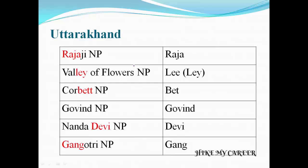In this video we are going to see about the Uttarakhand state national parks. The parks are: Rajaji National Park, Valley of Flowers National Park, Corbett National Park, Govind National Park, Nanda Devi National Park, and Gangotri National Park. These are the national parks of Uttarakhand state.